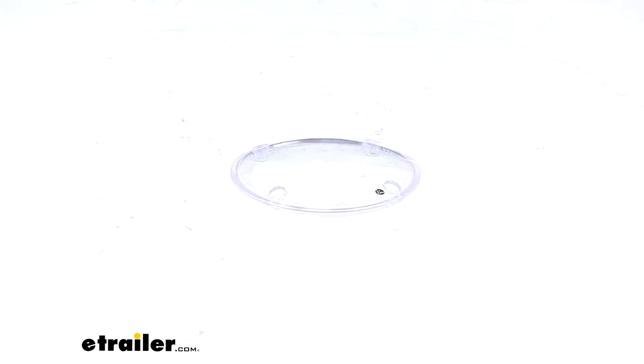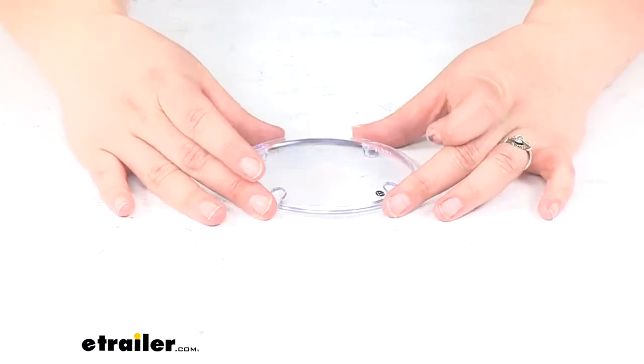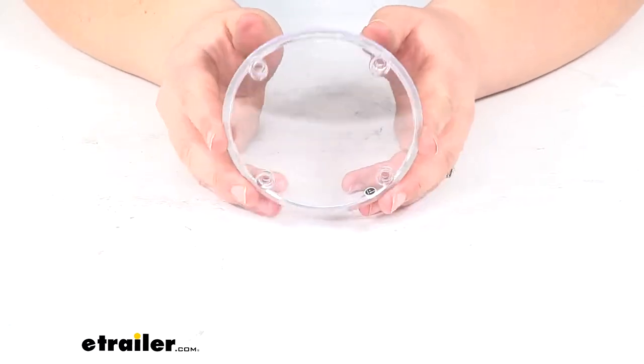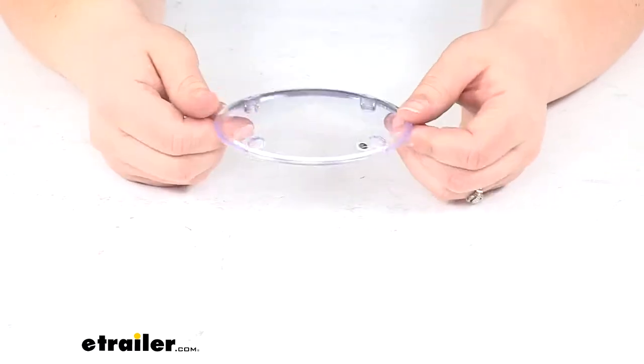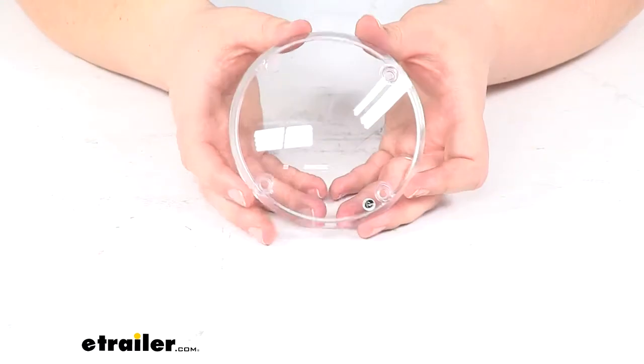Today we'll be taking a quick look at the replacement clear lens for Command Electronics LED triple tail light. This is the center clear lens that goes over your light to make sure your rear function is protected.